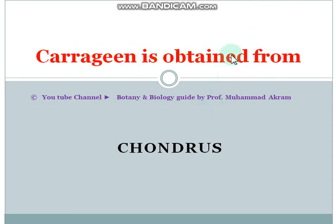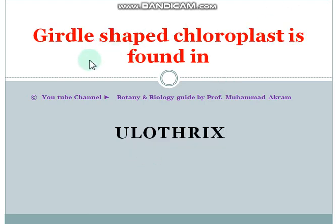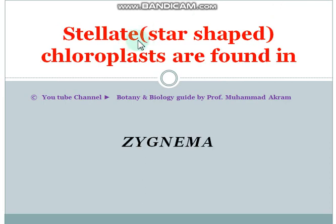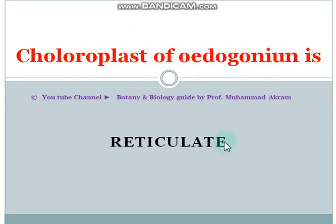Carrageenan is obtained from Chondrus. A girdle-shaped chloroplast is found in Ulothrix. Stellate, or star-shaped, chloroplasts are found in Zygnema — you should know various shapes of chloroplasts and which algae they are found in. The chloroplast of Oedogonium is reticulate in shape.